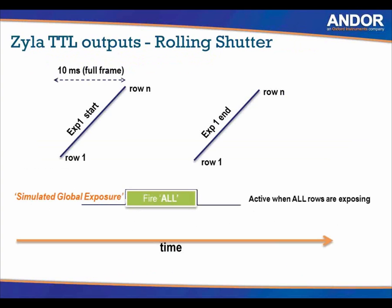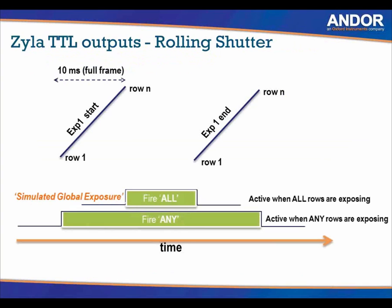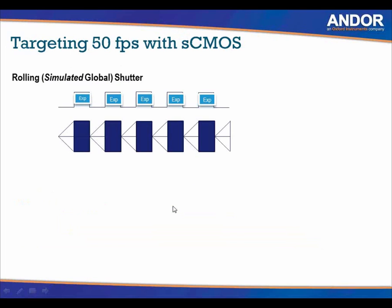When you receive a CMOS camera, you get a trigger cable. To simulate a global exposure mode on a 4T camera, you need to use the fire-all output of the trigger cable. The fire-all turns the light on after the transient phase and leaves it on until the end of exposure — the slanted line showing the transient phase is where you're getting the camera ready to be exposed. The light is not turned on during the transient phase at the beginning or the end of exposure.